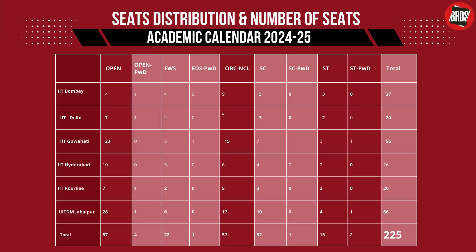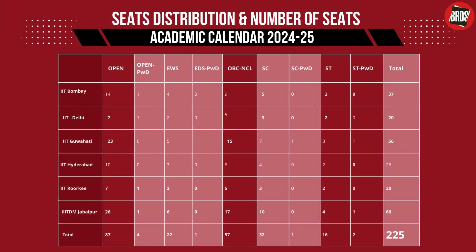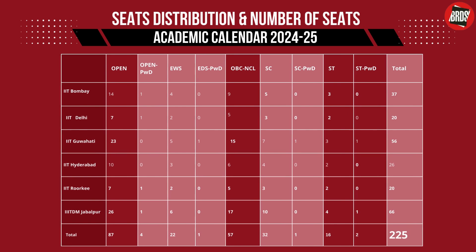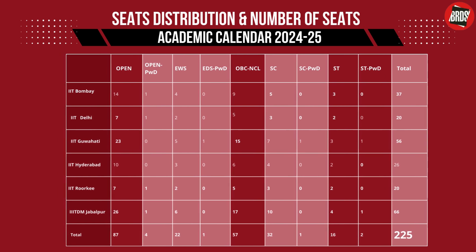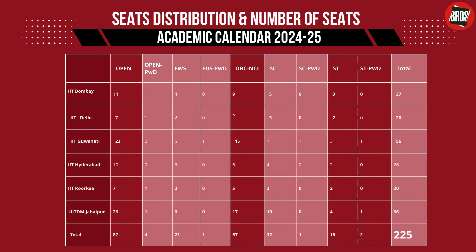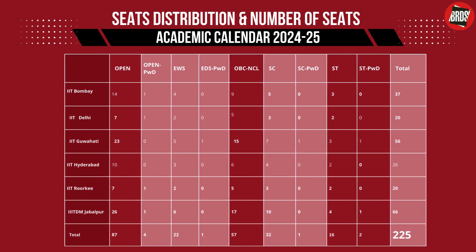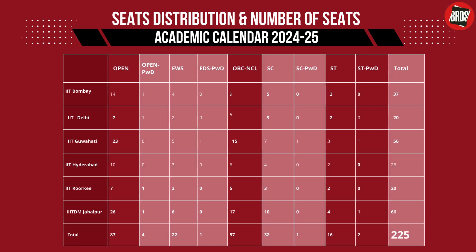The total number of seats for the B.Des program at IIT are 225, as per the seat matrix for the academic calendar 2024–25. Have a look at this table for your better understanding.